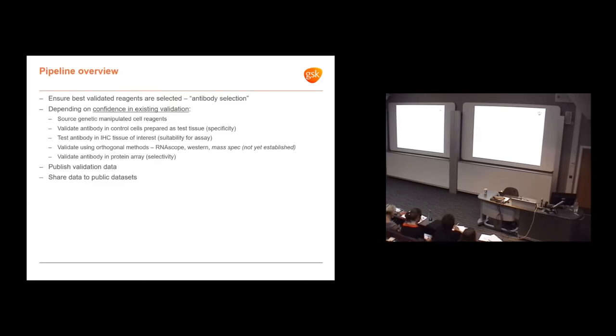Moving on to the antibody validation pipeline. We make compromises about cost and time. First, we ensure we're selecting the best possible reagents in the antibody selection phase. Then depending on confidence in existing validation data, we look at specificity, suitability for the reagent using orthogonal methods, and whether the antibody cross-reacts to other genes. We're very keen to publish the data because only a small percentage of targets will actually go into drug discovery. The other 95% we can easily publish, and we're keen to share our data publicly.